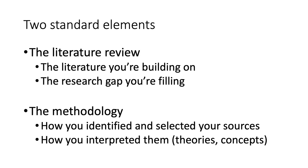Two elements which appear in every dissertation in some form or other are the Literature Review and the Methods section. These are usually the first two things you start to write, as they help to inform and contextualise your own research and get you to think about exactly how you're going to carry it out. You may have had to do a pilot version as part of your dissertation proposal, and they will appear in the dissertation or thesis itself too, although your thinking might have evolved since then once you've actually got stuck into your research.